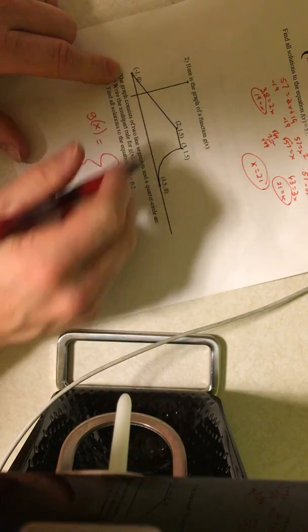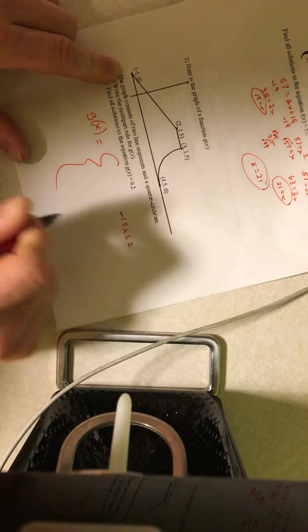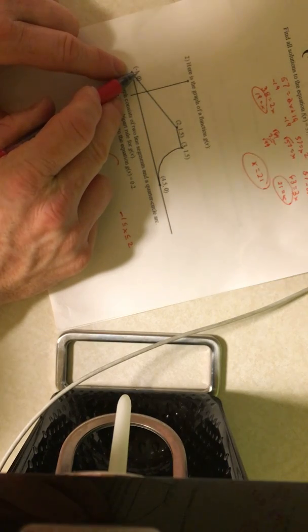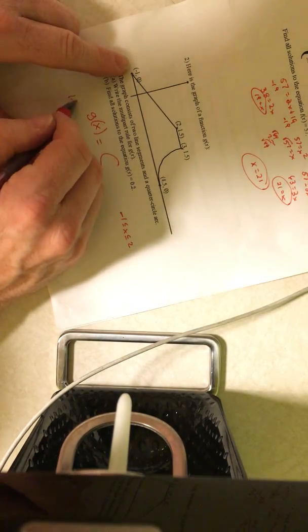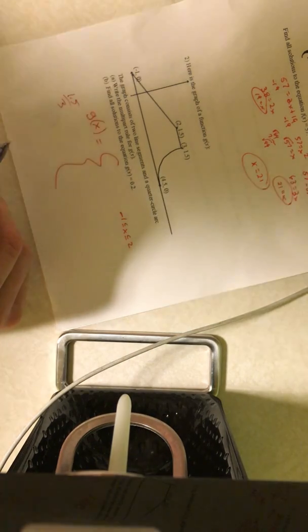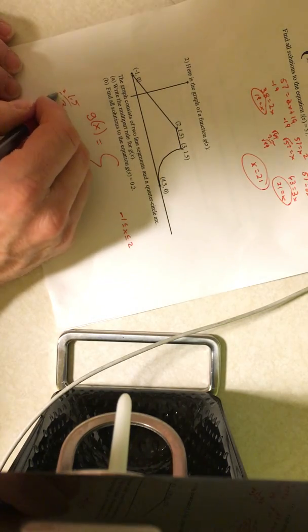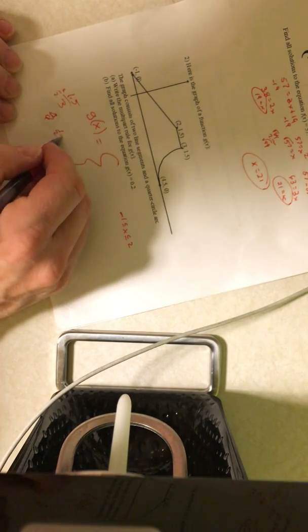And between negative 1 and 2 for my x values, I need to find the slope of this line. 1.5 minus 0 is 1.5. 2 minus negative 1 is 3. And 1.5 divided by 3 is the same thing as, if I multiply this with 2 over 2, of course I'd get 3 over 6, which is 1 half. So my slope is 1 half.